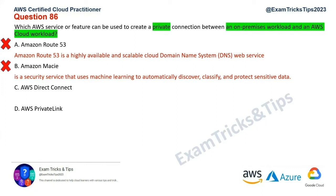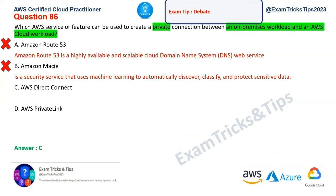We are left with two options. This is a situation with complicated questions where you can eliminate two easily, but choosing between the remaining two is difficult — and this is one of those questions. We are left with AWS Direct Connect and AWS Private Link. Option D, Private Link, is used when you communicate with a third-party VPC and it requires a network load balancer, service VPC, and an ENI customer VPC — that's not the situation here. What you need is to connect an on-premise workload with a cloud workload, and that is AWS Direct Connect.